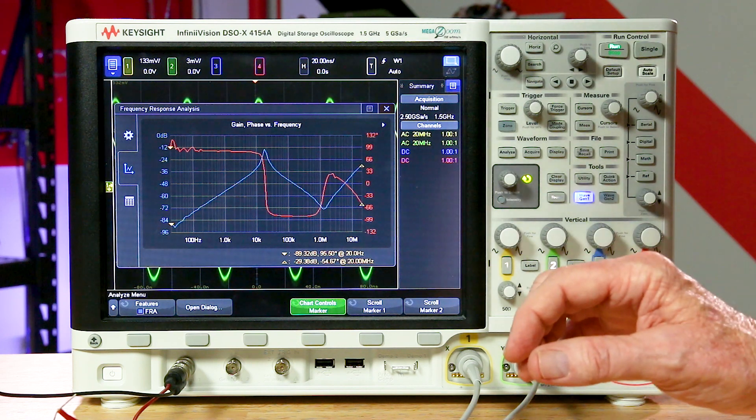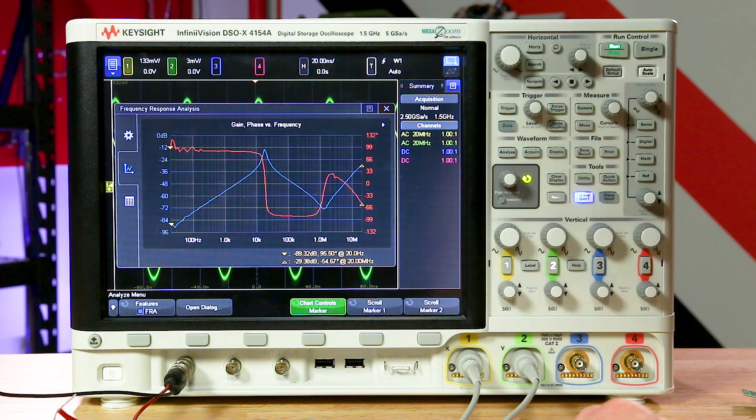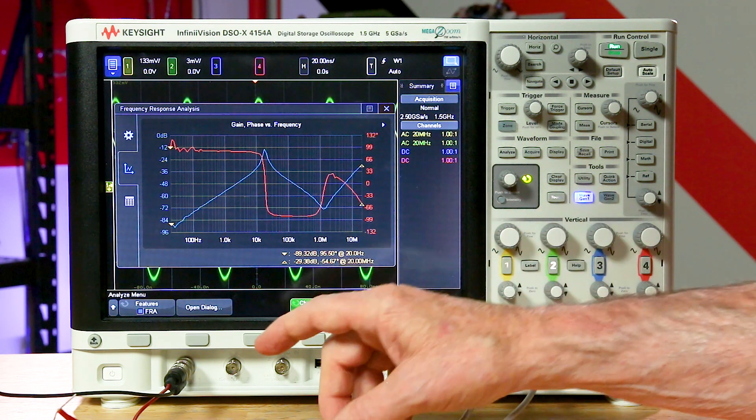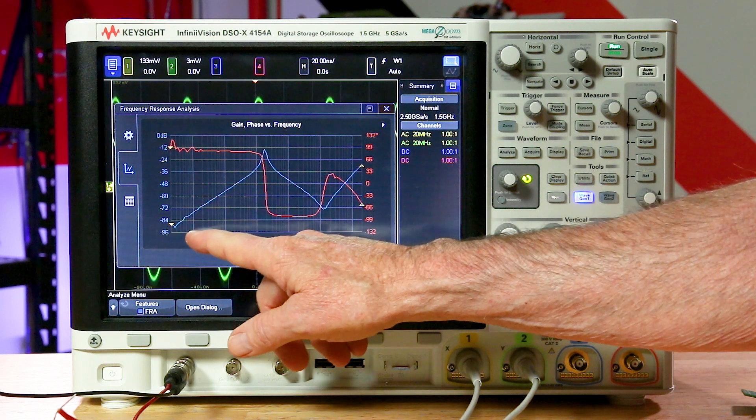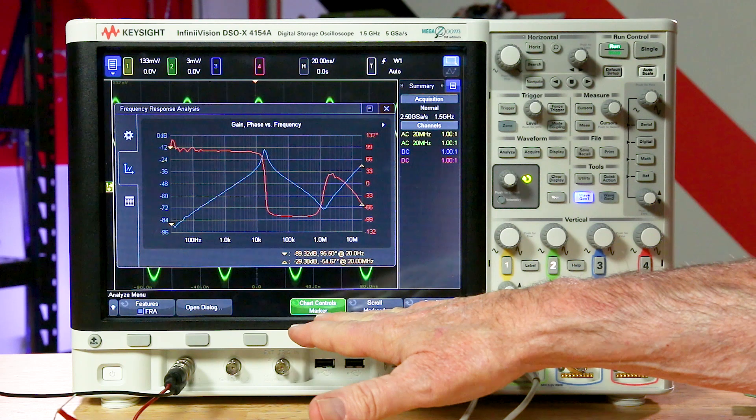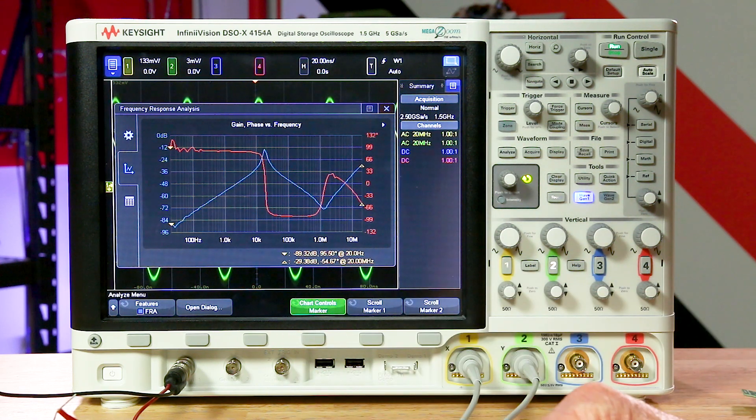So here's the results of that test on that bandpass filter. You can see we started out around minus 90 dB, so we've got very good dynamic range. Some of the enhancements we've made for you, we have fine grid lines now between the decades, and we have more explicit controls for rescaling the results as well as making measurements.